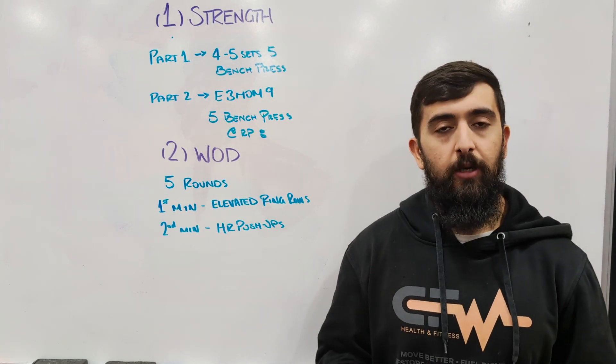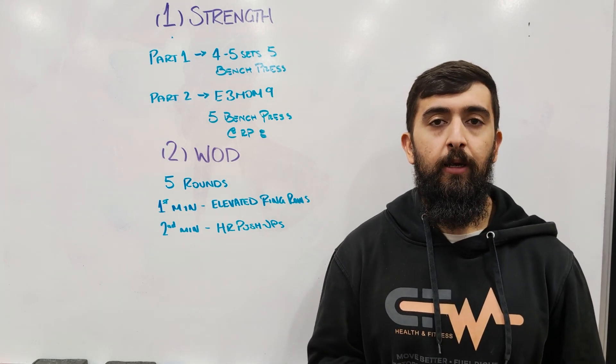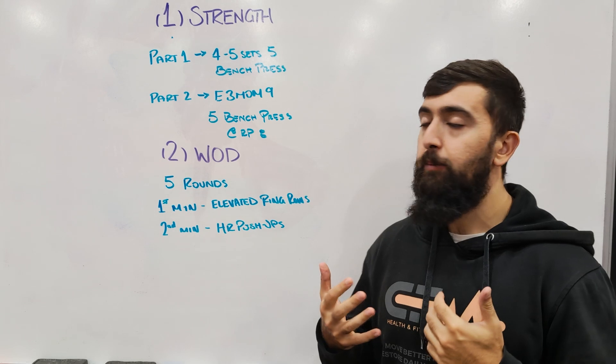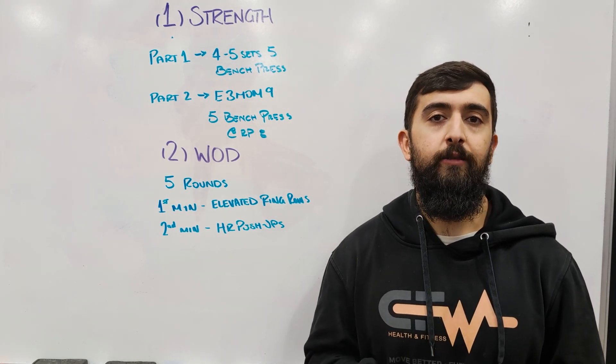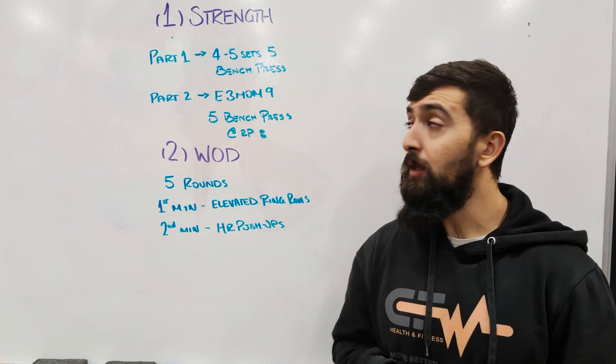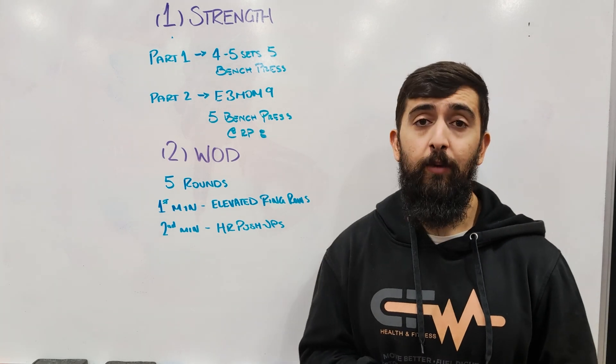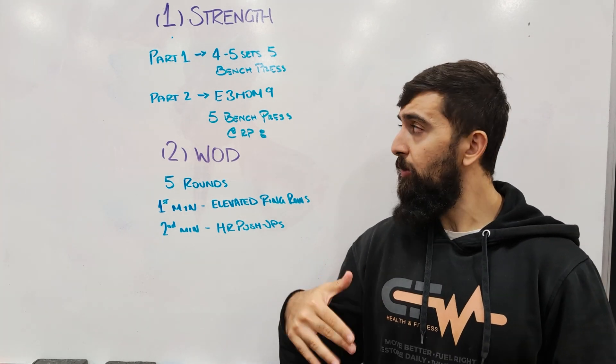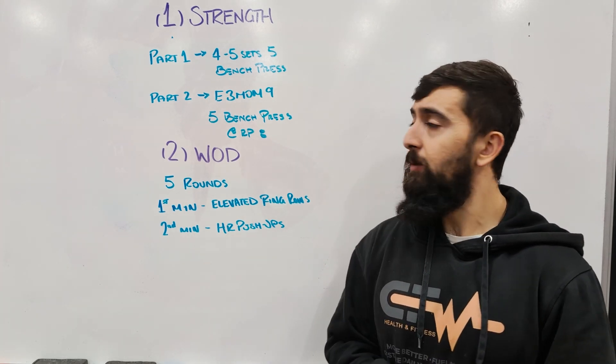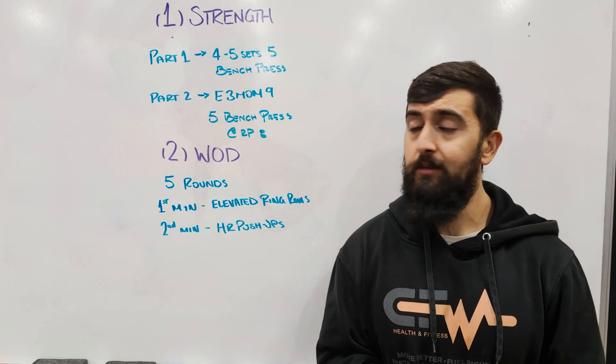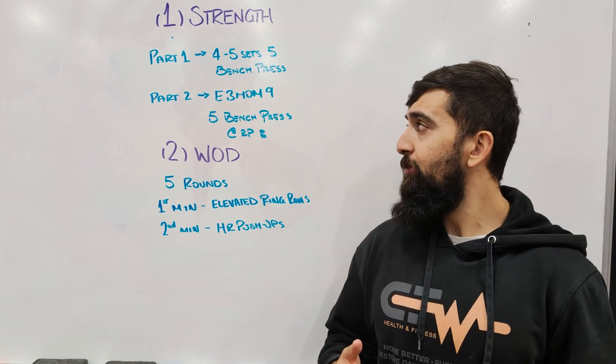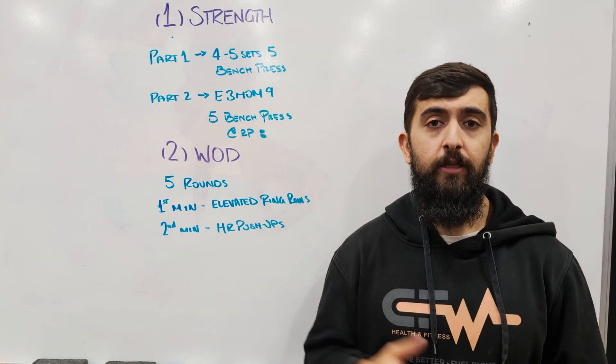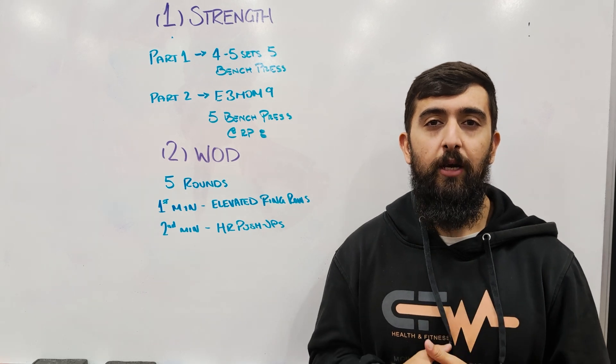Part one's more about warming up and preparing and building up to a bench press weight that feels like an eight or nine out of ten that we can do for five reps. Once we get to that weight, in part two in a running timer, we're going to do every three minutes on the minute for nine minutes. We're going to go five bench press every three minutes at that level eight, level nine level.